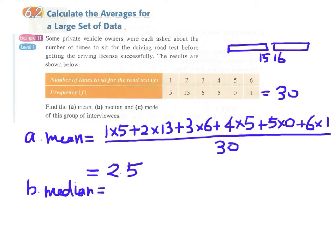should be in group 2, where the number of times is 2 to sit for the road test. Since 5 + 13 = 18 and we need the 15.5th value, this should be within group 2. The median is 2.